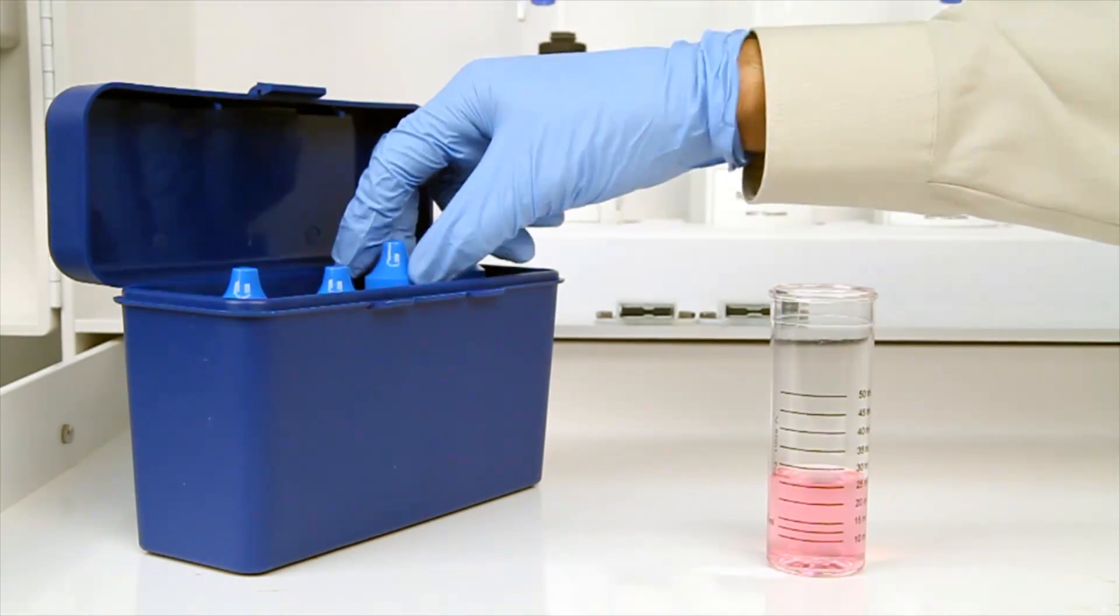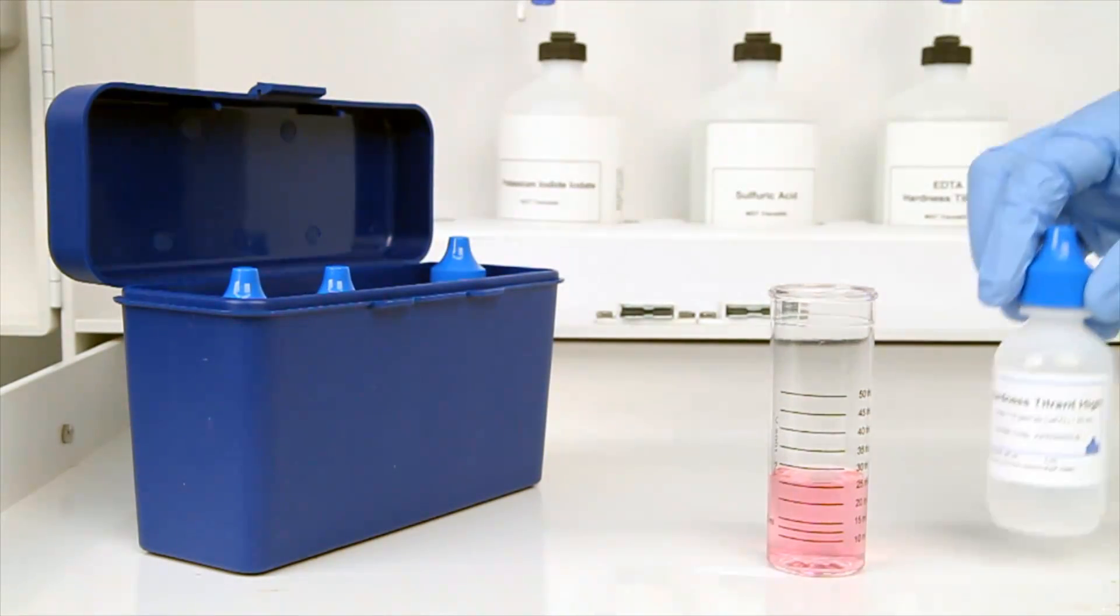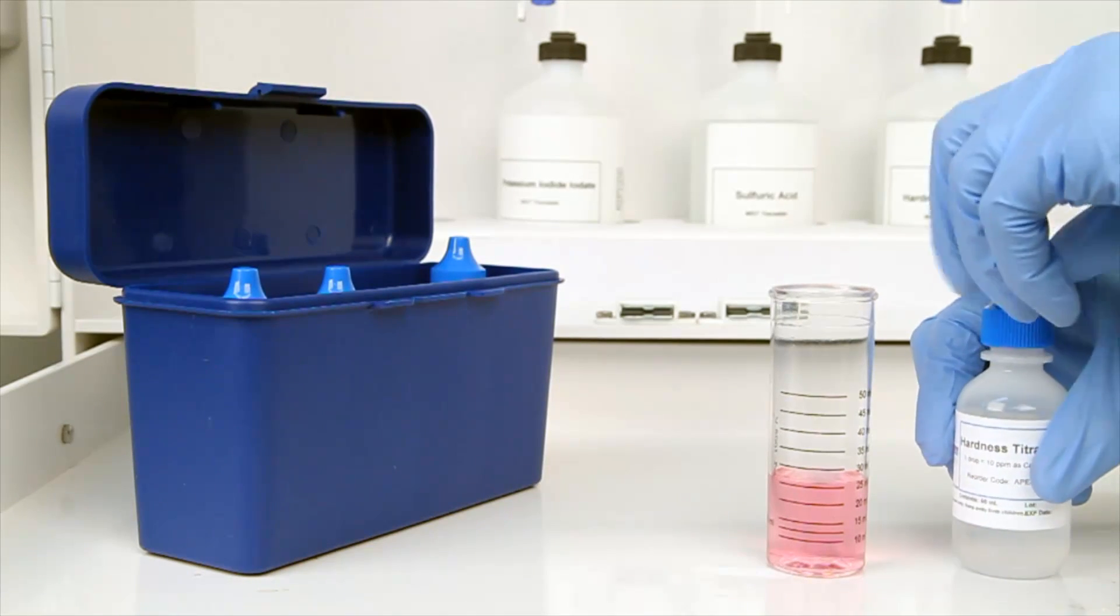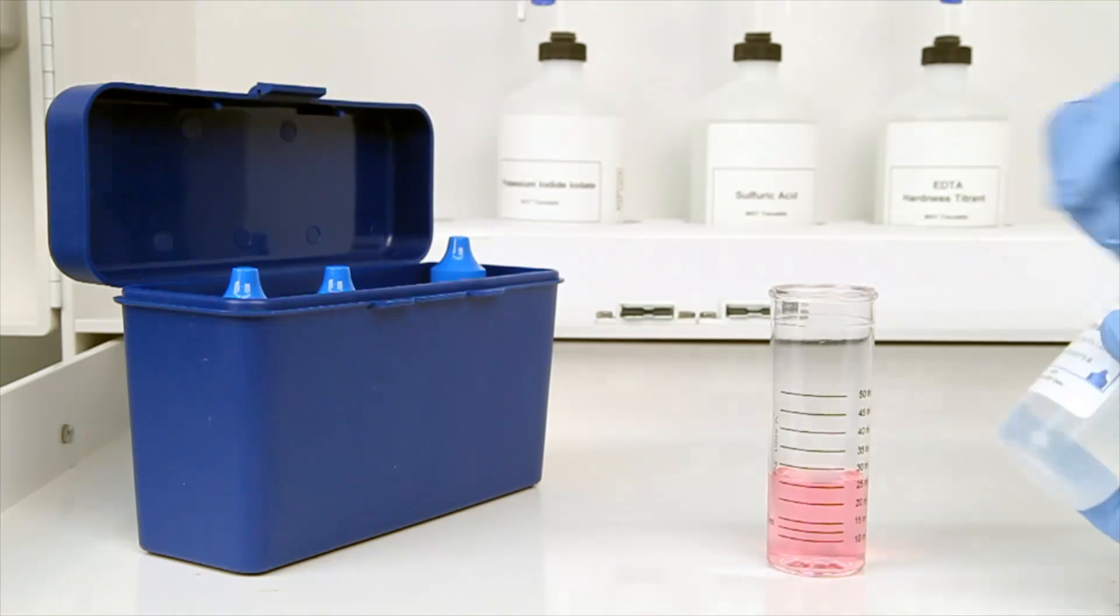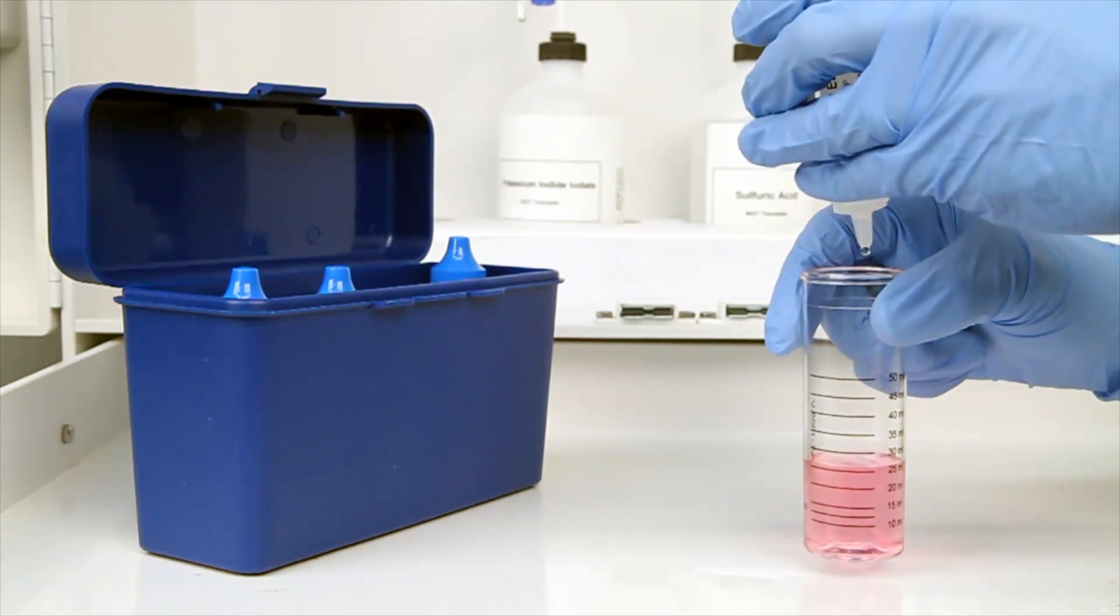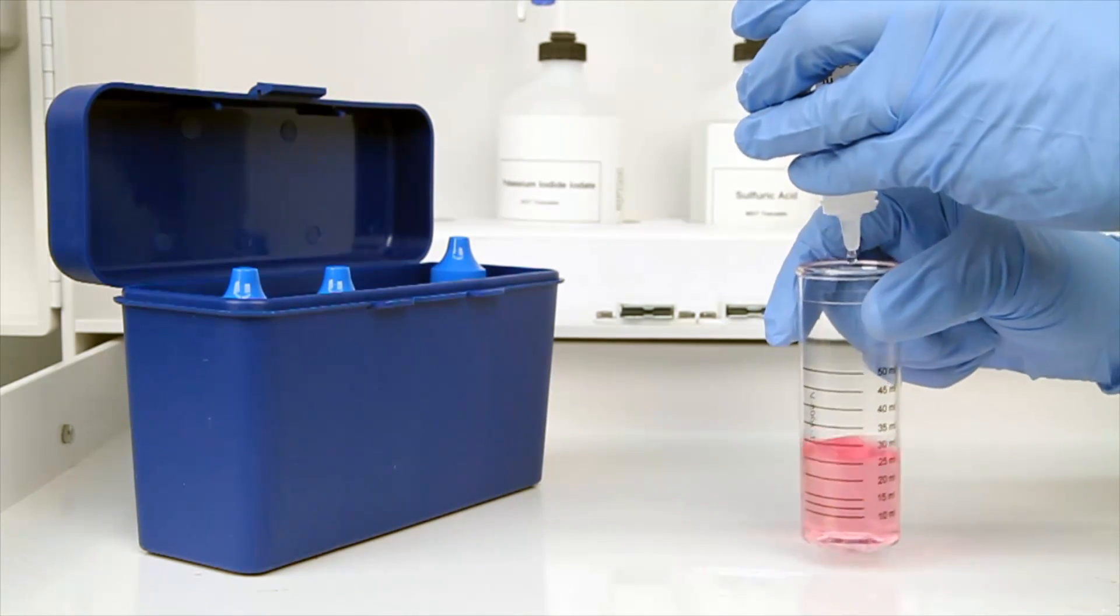The next step according to the Endpoint ID procedure is to perform the titration. Each bottle of titrant is labeled with the equivalency and sample size it was manufactured for. It's important to make sure you have the proper titrant and the proper sample size for this titration.